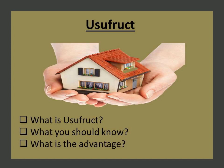Usufruct is a will or legal contract, and the third person who is using the property is called the usufructuary. A usufructuary holding a property can lease or rent it to earn money, or if the property is agricultural land, sell the crops the land creates.